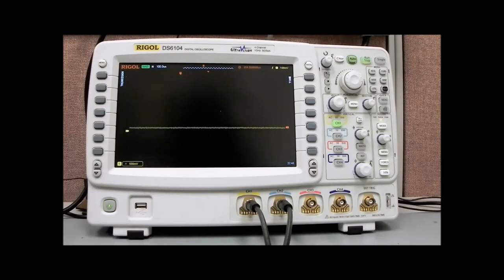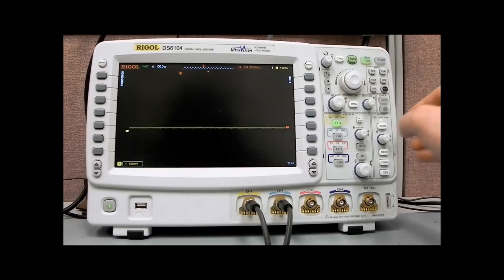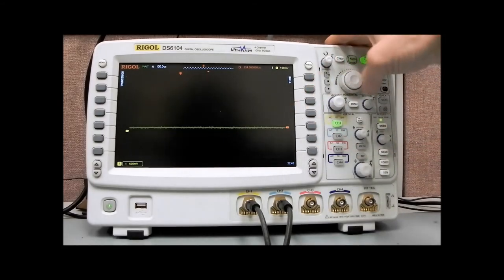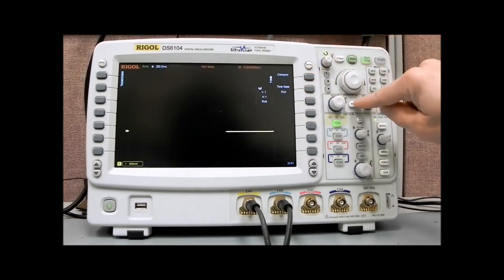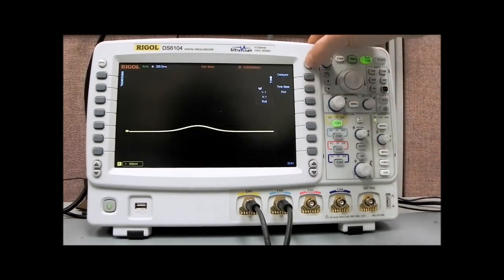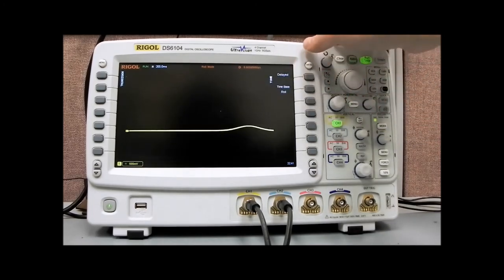For slower-moving signals, the DS6000 also has a roll mode. What I have here is a function generator set up to perform a waveform that's like a cardiac or EKG signal, and I have it set to 100 millihertz. Right now we're triggering on it, but you can't really see a whole lot of detail. What we can do is enable roll mode, which is in the horizontal time scale, horizontal menu. We can select roll.